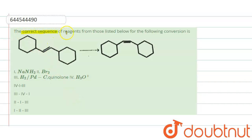The given question is: the correct sequence of reagents from those listed below for the following conversion. To make this conversion, here are some reagents given and we have to find which is the correct order of these three arrangements. So this is trans.